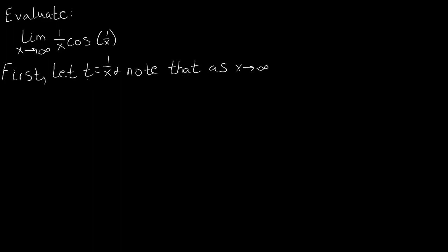And we note that as x approaches infinity, the x in the denominator of 1 over x is approaching infinity. So our denominator is growing infinitely larger, meaning that this t, that 1 over that thing growing infinitely larger, is getting smaller and smaller. So as x approaches infinity,